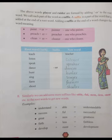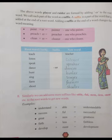Root word (verb) plus suffix equals new word: teach plus -er equals teacher, listen plus -er equals listener, speak plus -er equals speaker, dance plus -er equals dancer, hunt plus -er equals hunter, sing plus -er equals singer, farm plus -er equals farmer, shoot plus -er equals shooter.